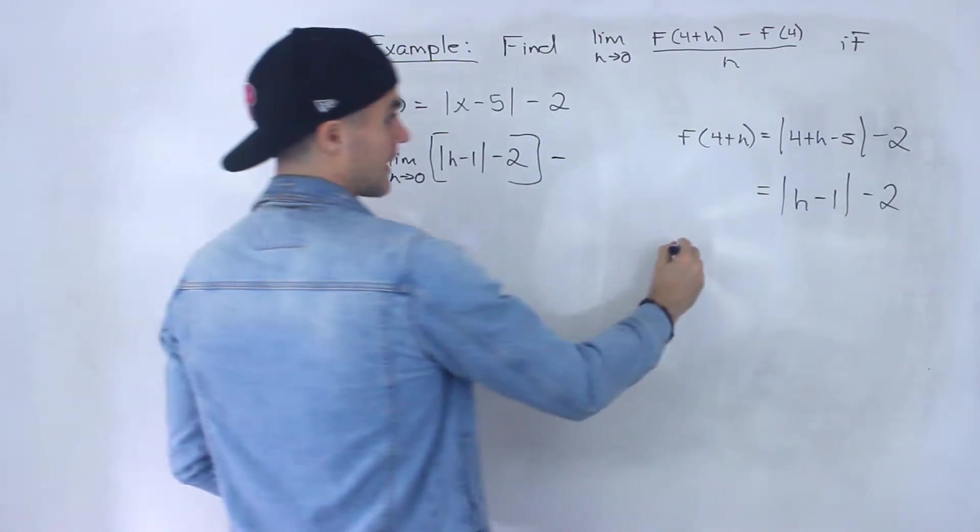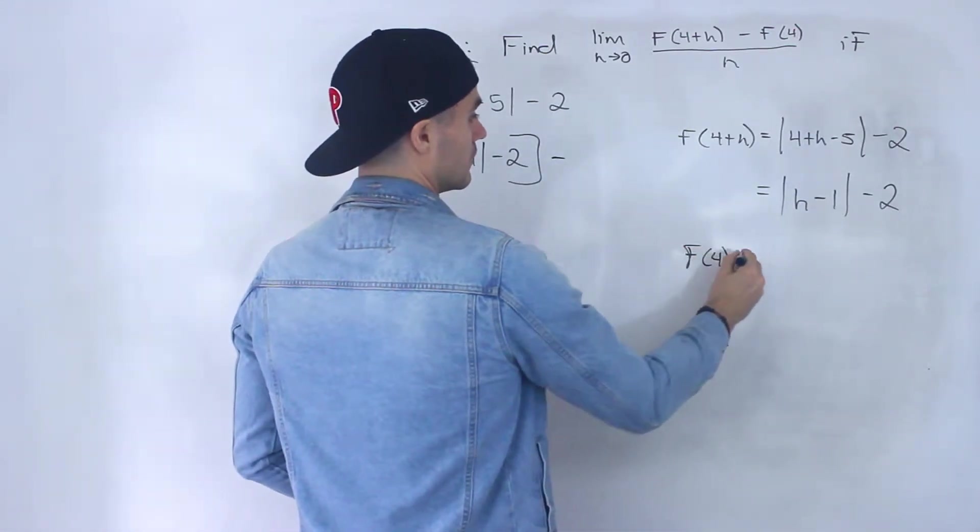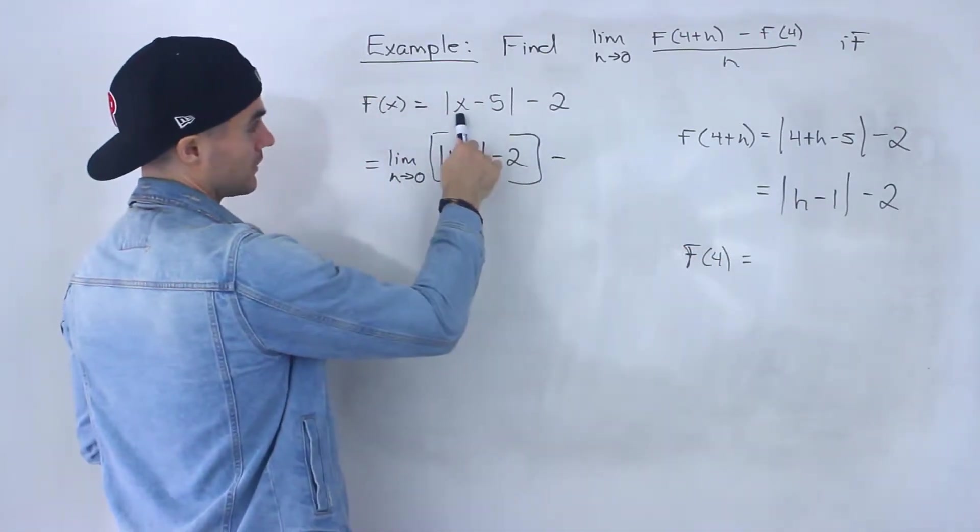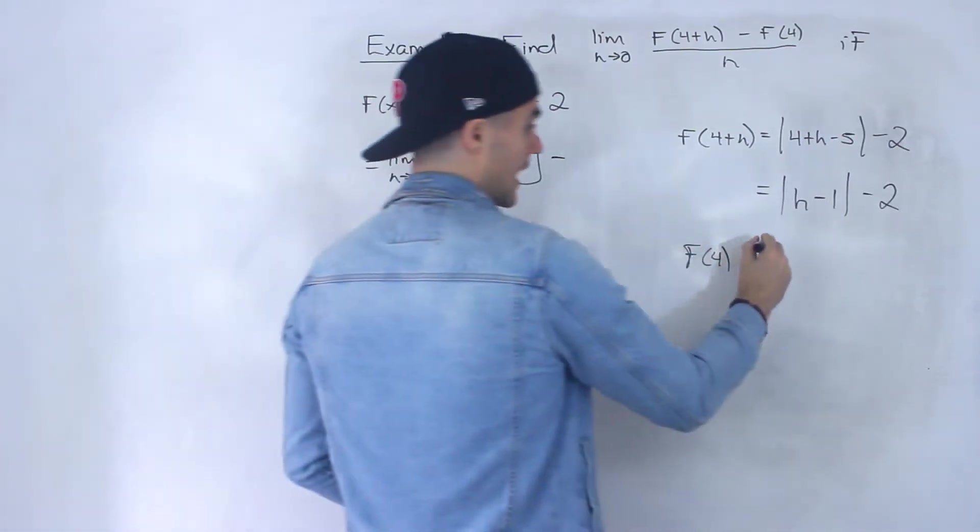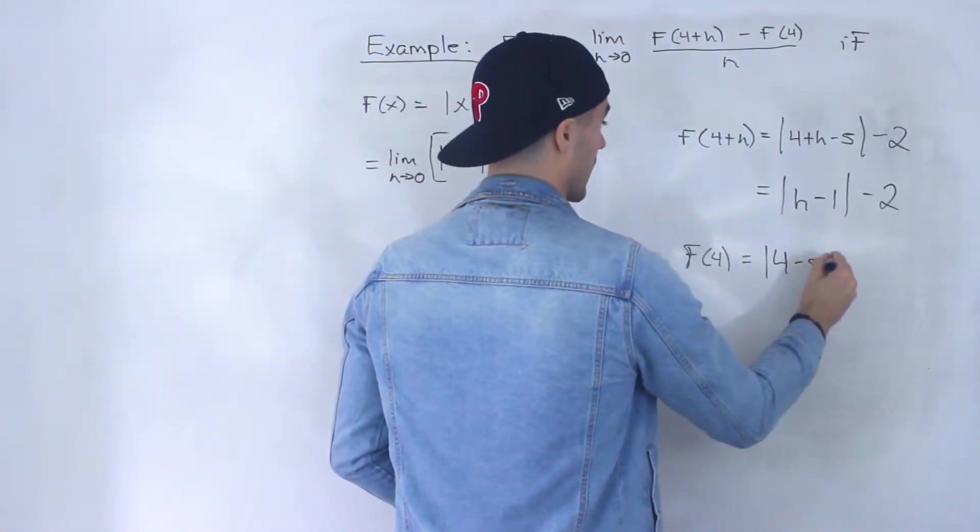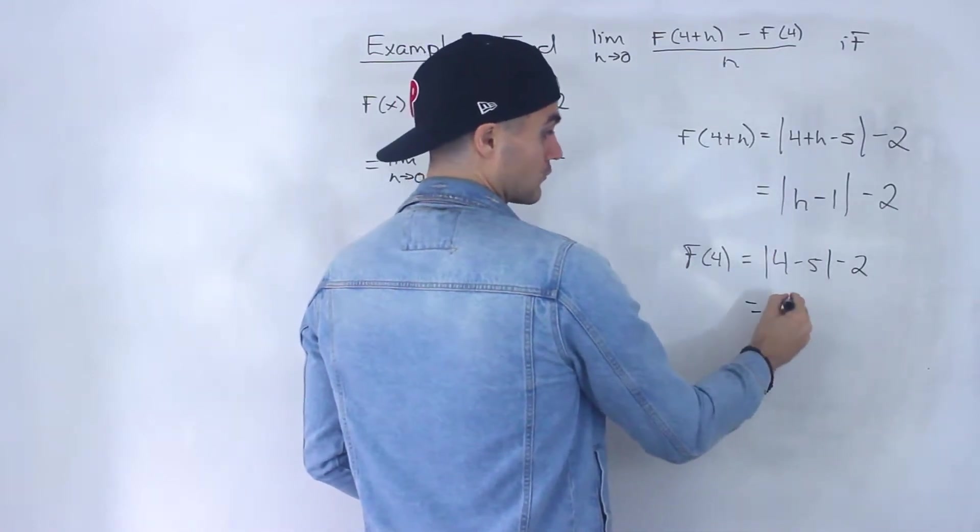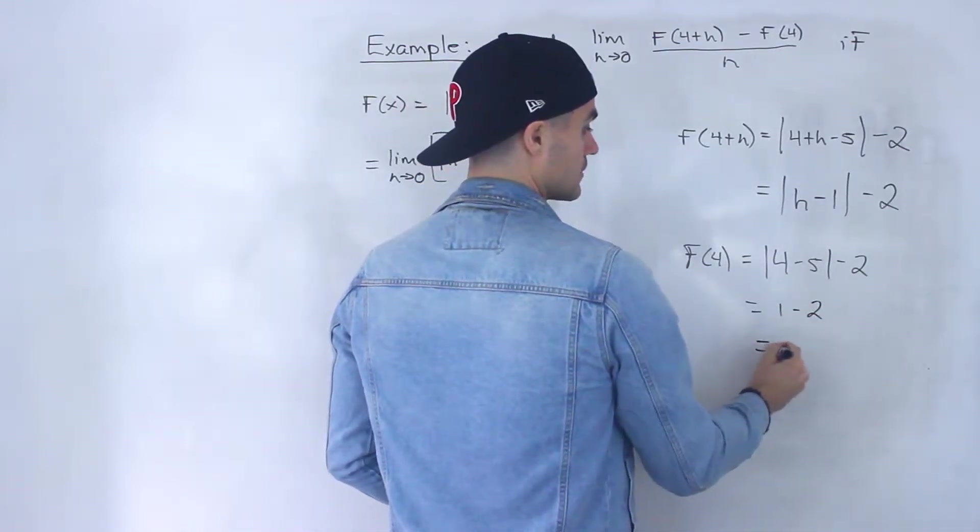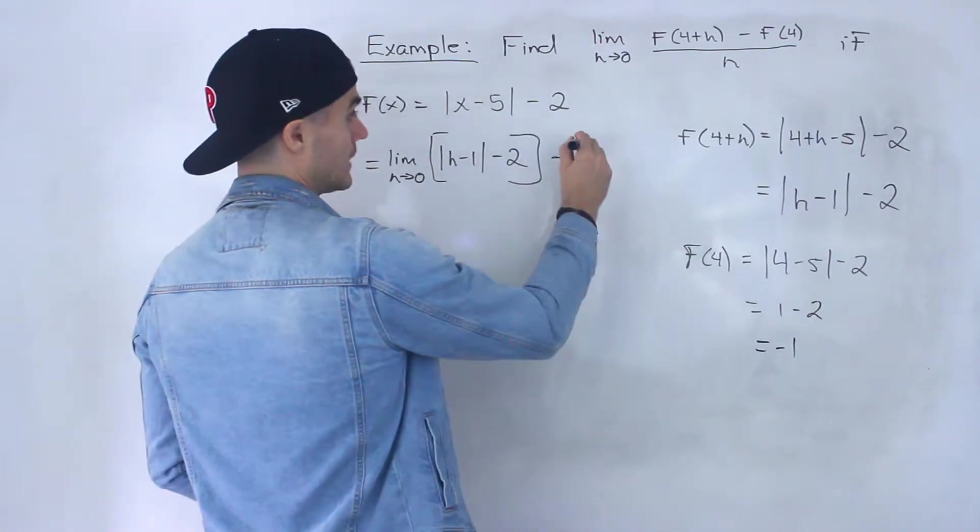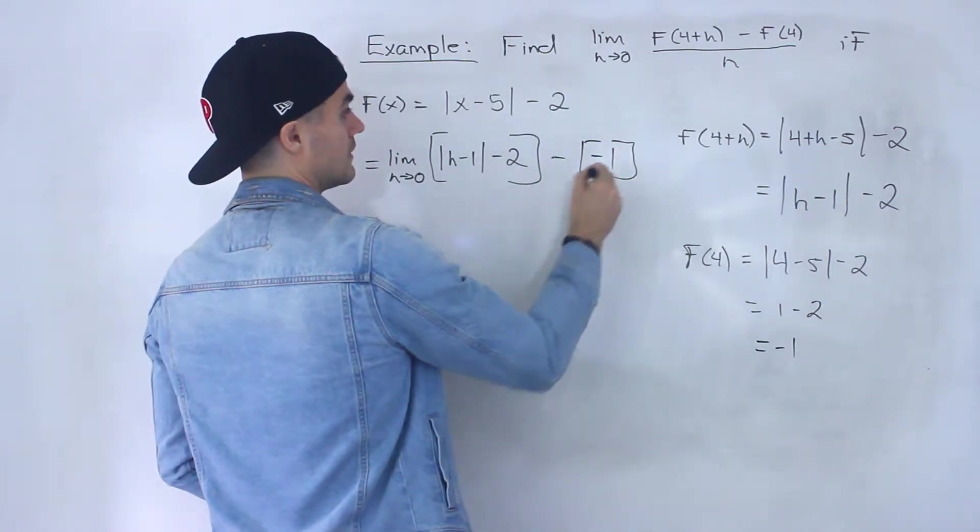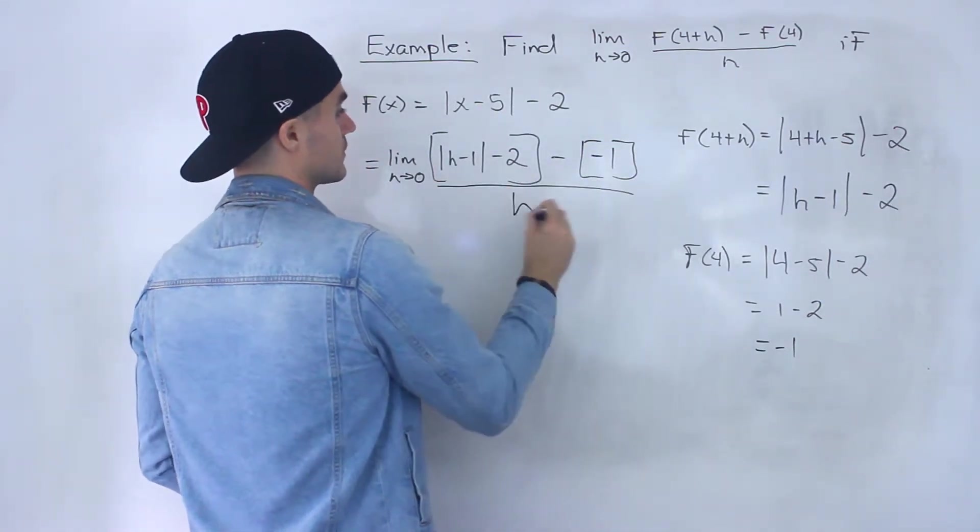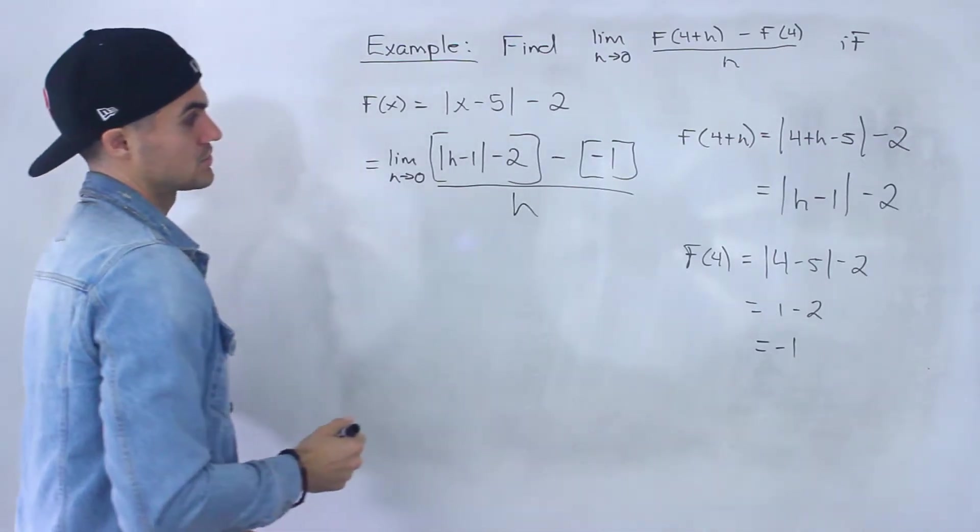Now we've got to subtract f(4). This one's a little more simple. We just plug in 4 for x, so we'd have the absolute value of (4-5) - 2. This would be -1. Absolute value of -1 is positive 1, minus 2 gives us -1. So we would have minus negative 1 there, and this is still all over h.